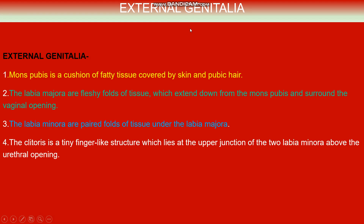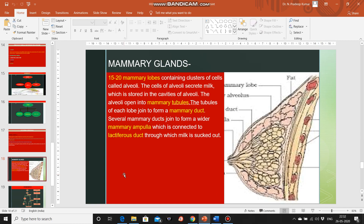The external genitalia consists of the mons pubis — a cushion of fatty tissue covered by skin and pubic hair — the labia majora, which are fleshy folds of tissue extending down from the mons pubis surrounding the vaginal opening, the labia minora — paired folds of tissue under the labia majora — and the clitoris, a tiny finger-like structure at the upper junction of the two labia minora above the urethral opening.